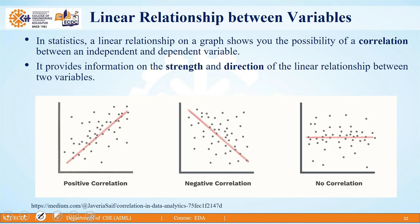Let us extend this concept of linear relationship further. The key term here is correlation, which tells us two things about the relationship between variables: first, the strength — how strongly the two variables x and y are connected — and second, the direction — whether the relationship is in direct proportion or indirect proportion, in other words whether it is a positive correlation or a negative correlation. This concept of correlation is widely used in the field of data science.